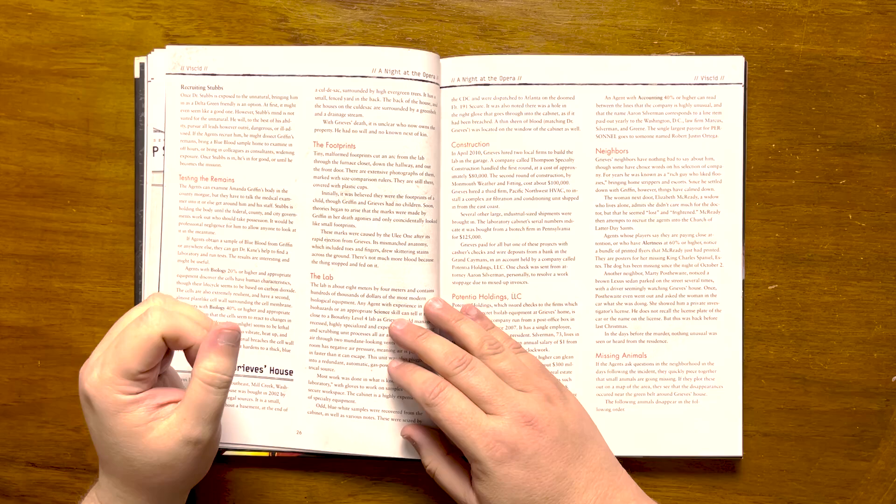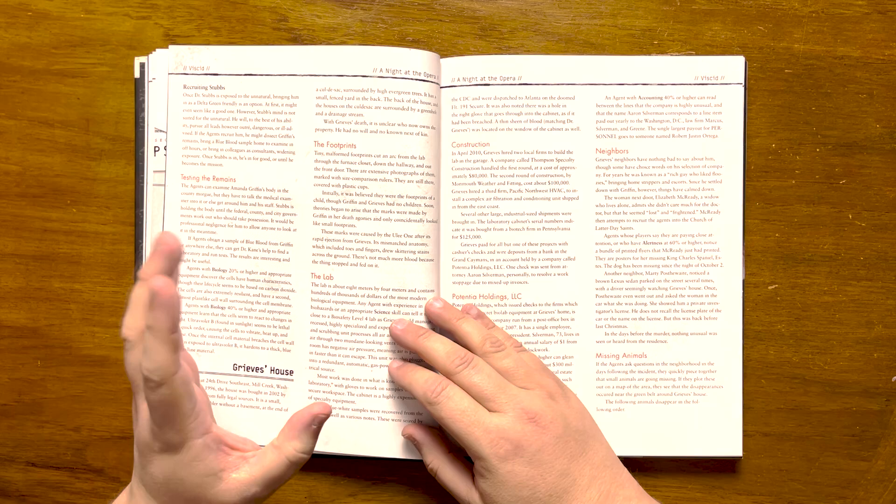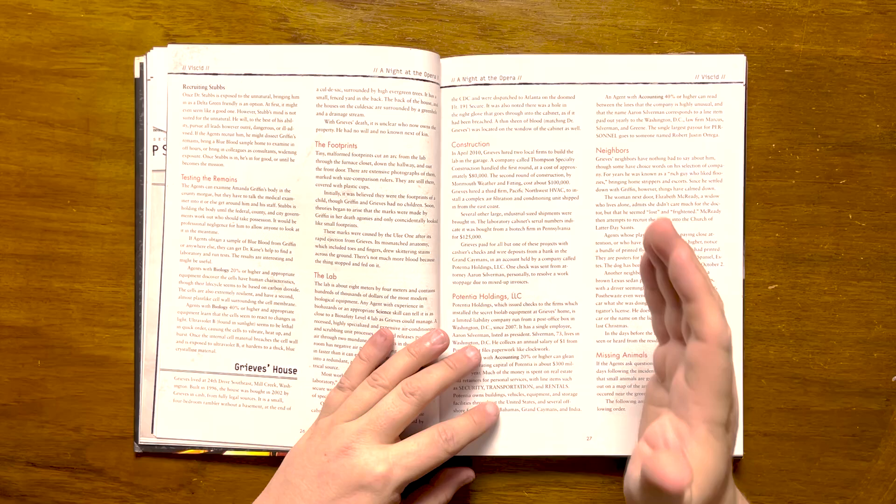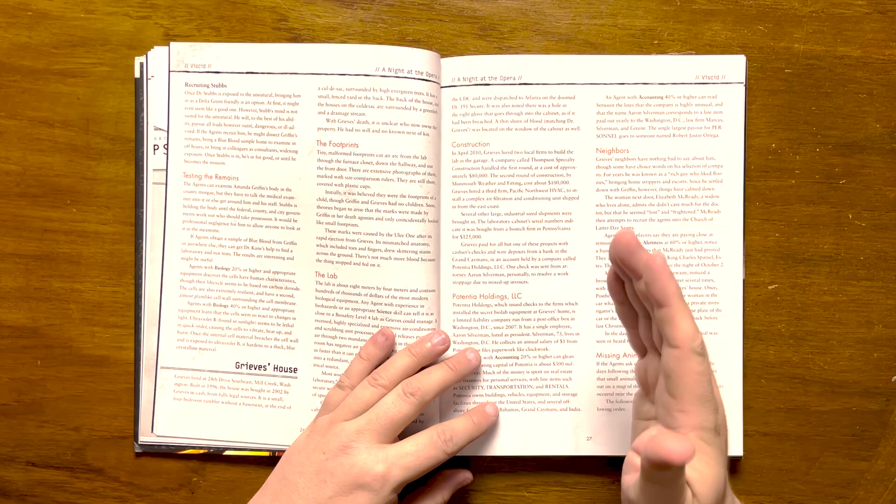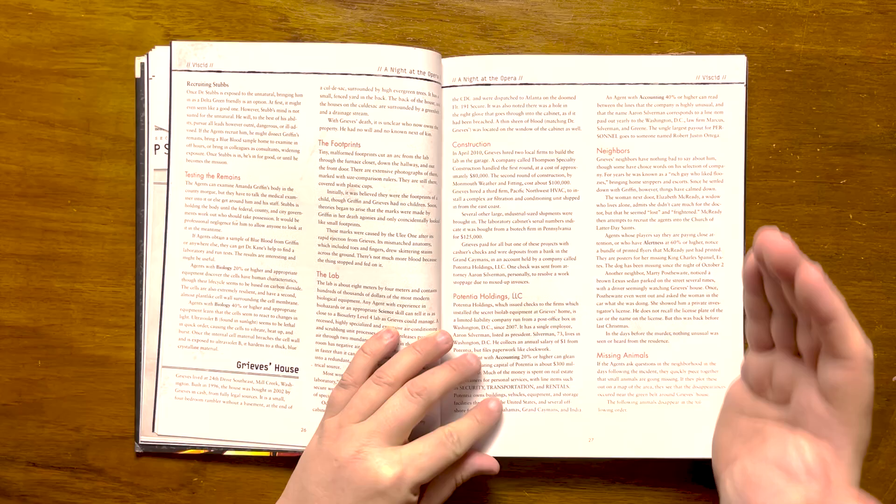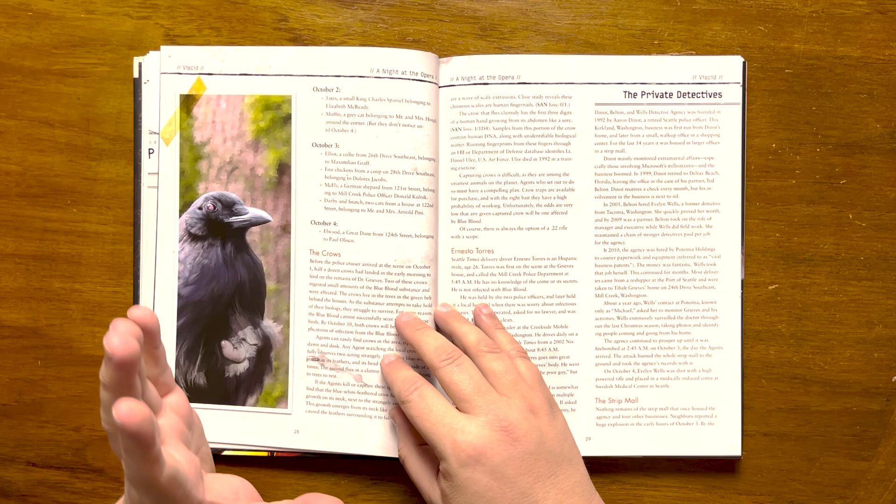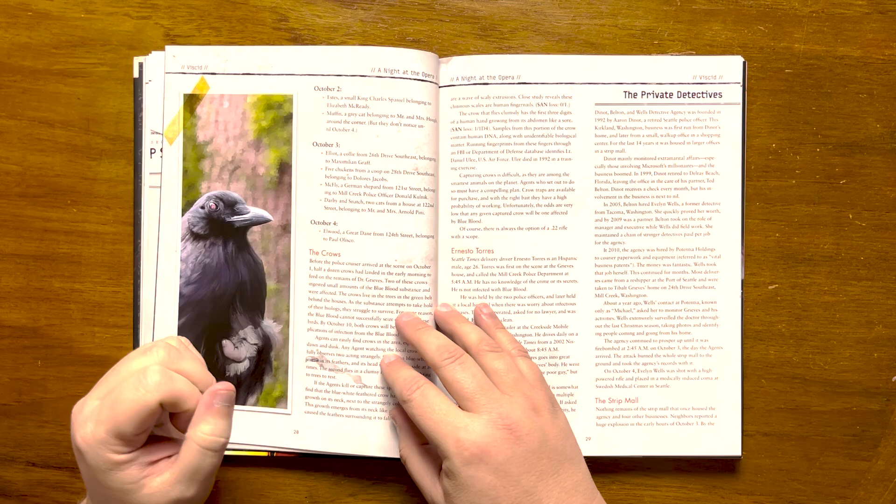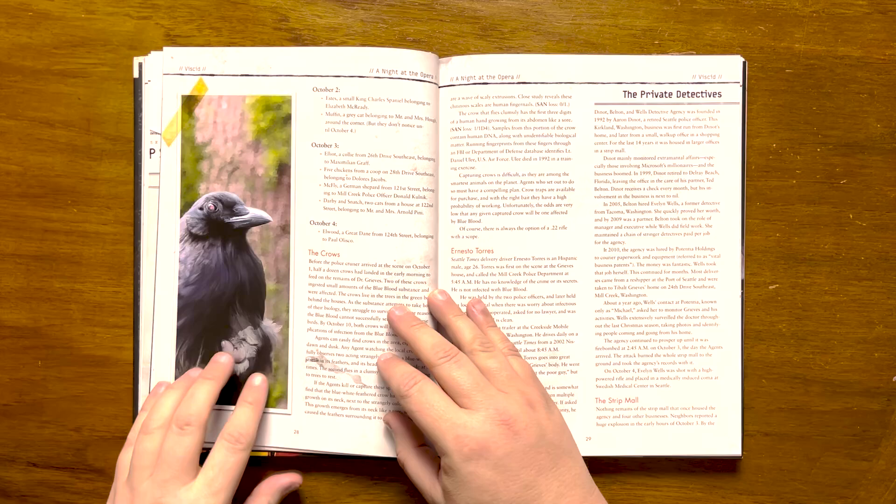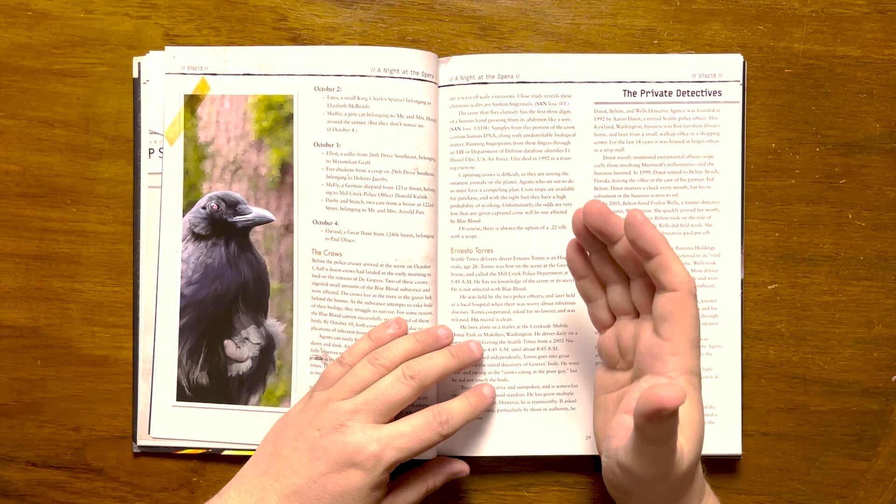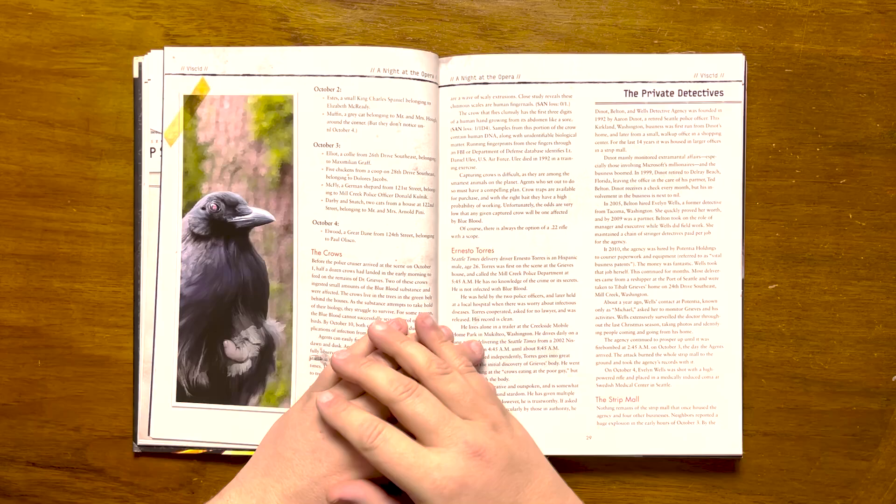Greaves' house can also be looked into. He has had a full biohazard lab installed professionally. Various clues and leads can be discovered here: tiny, malformed bloody footprints can be discovered, as well as documentation that links the building of the lab to Potentia Holdings LLC, which leads to an employee called Aaron Silverman and his law firm Marcus Silverman & Green, whose largest payout for personnel goes to Robert Justin Ortega. The neighbors can be questioned and will report missing pets, as well as information on the PI that was hired. Also of interest are the crows. When Greaves was discovered, two crows were feeding on his corpse. This has allowed the blue blood to pass on to them, although for some reason it hasn't been able to exert control. If they can be tracked down, they can be found with strange colored feathers and scaly extrusions, as well as one of them having three digits from a human hand. This can actually be fingerprinted and lead to Daniel Uli, although capturing creatures as smart as crows could prove difficult.